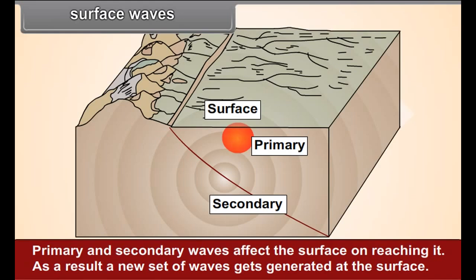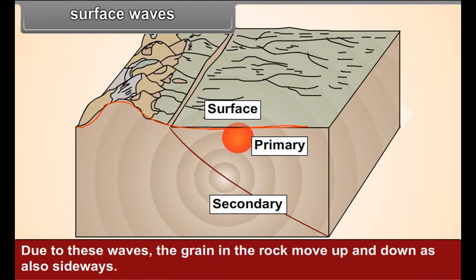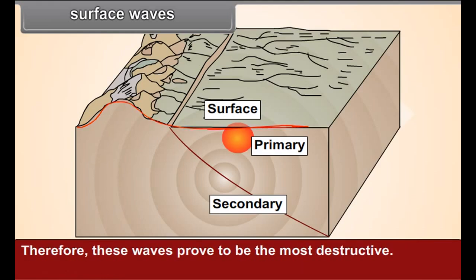Surface waves - Primary and secondary waves affect the surface on reaching it. As a result, a new set of waves gets generated at the surface. These waves spread along the circumference of the earth. Due to these waves, the grains in the rock move up and down as also sideways. Therefore, these waves prove to be the most destructive.